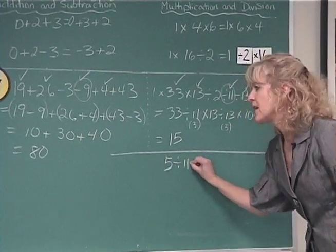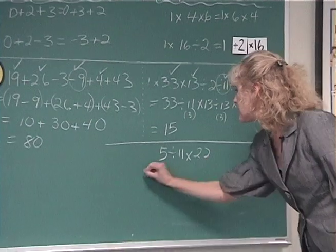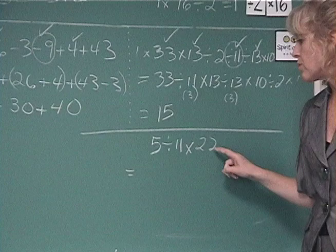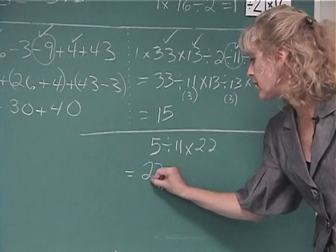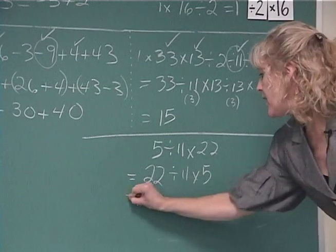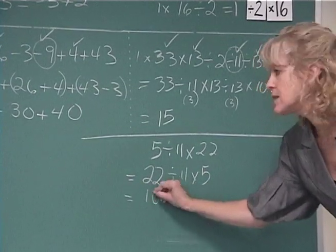5 divided by 11 times 22 is a nice one. 5 divided by 11 is kind of tough to do if you move from left to right, but if you use a relocation property, you can do 22 divided by 11 times 5, and that is the same as 2 times 5, which is 10.